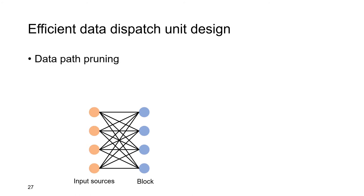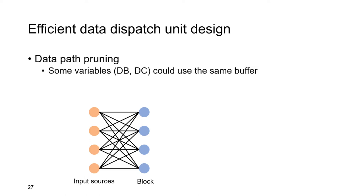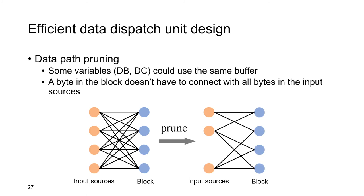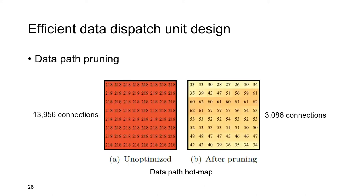As a result, we propose the data path pruning and spatial-temporal multiplexing technique. Data path pruning is based on two observations. First, some variables can share the same buffer — for example, digest B and digest C, because they will not be accessed at the same time — so we reuse the buffer for multiple variables and reduce the bytes in the input sources. Second, bytes in the block don't have to connect with all bytes in the input sources, so we customize the size of each multiplexer so that only possible candidates are connected. The total number of connections is reduced from 14,000 to 3,000.